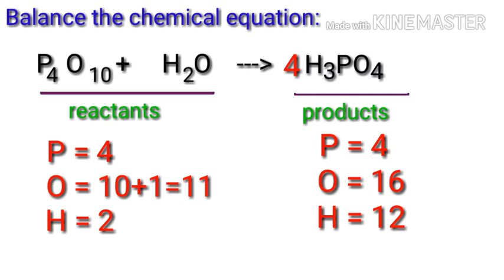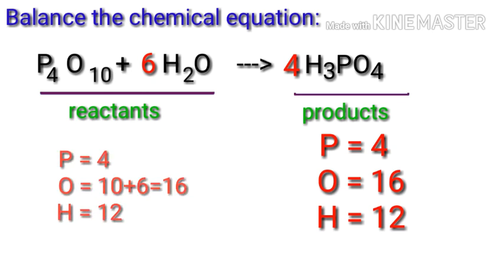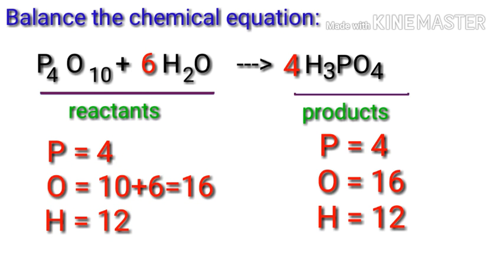The phosphorus atoms are balanced. Now we need to balance the oxygen and hydrogen atoms. To do this, we need to put a coefficient of six in front of H2O. The equation is now balanced. There are four phosphorus atoms, 16 oxygen atoms, and 12 hydrogen atoms on both sides.